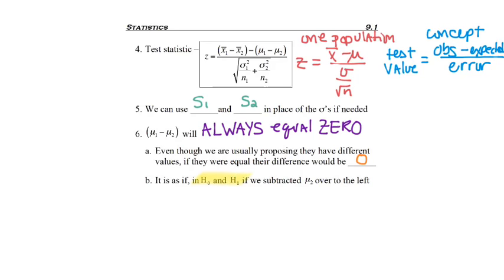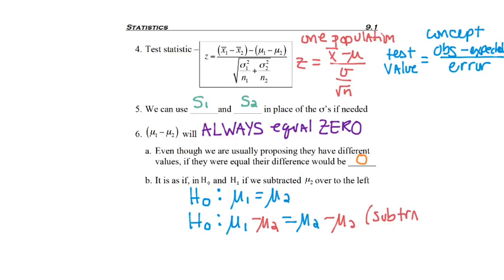To help understand that concept, we take that H0 and H1 that we had before, and we would be subtracting mu2 over. So I've got H0, we'll just focus on that one, is mu1 equals mu2. If we subtract mu2 to both sides,